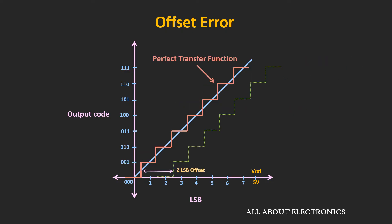Similarly, if the actual transfer function lies below the ideal transfer function, the offset error is negative. As you can see, for the perfect ADC the first transition should occur at 0.5LSB, but in this green curve the first transition occurs at 2.5LSB — so clearly there is an offset of 2LSB.